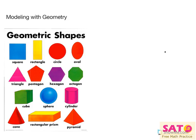Hey there! Let's talk about modeling with geometry. So here we have some basic geometric shapes, both two-dimensional and three-dimensional, and some key things to remember here are sphere, cube, cylinder, pyramid, rectangular prism, and cone.